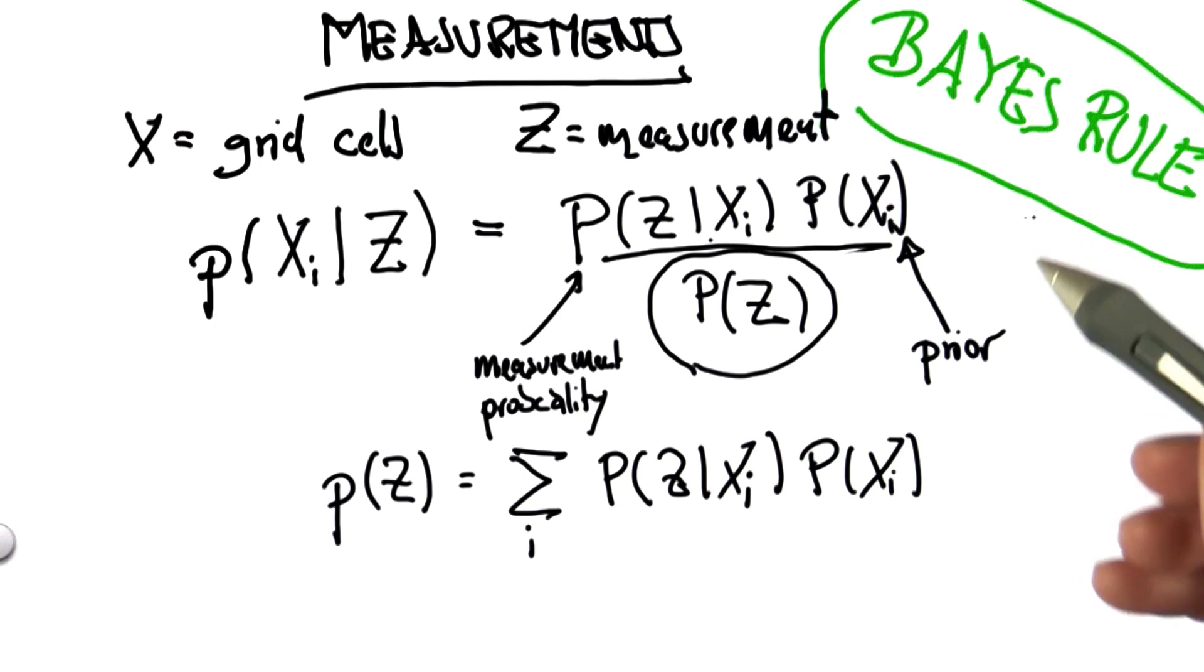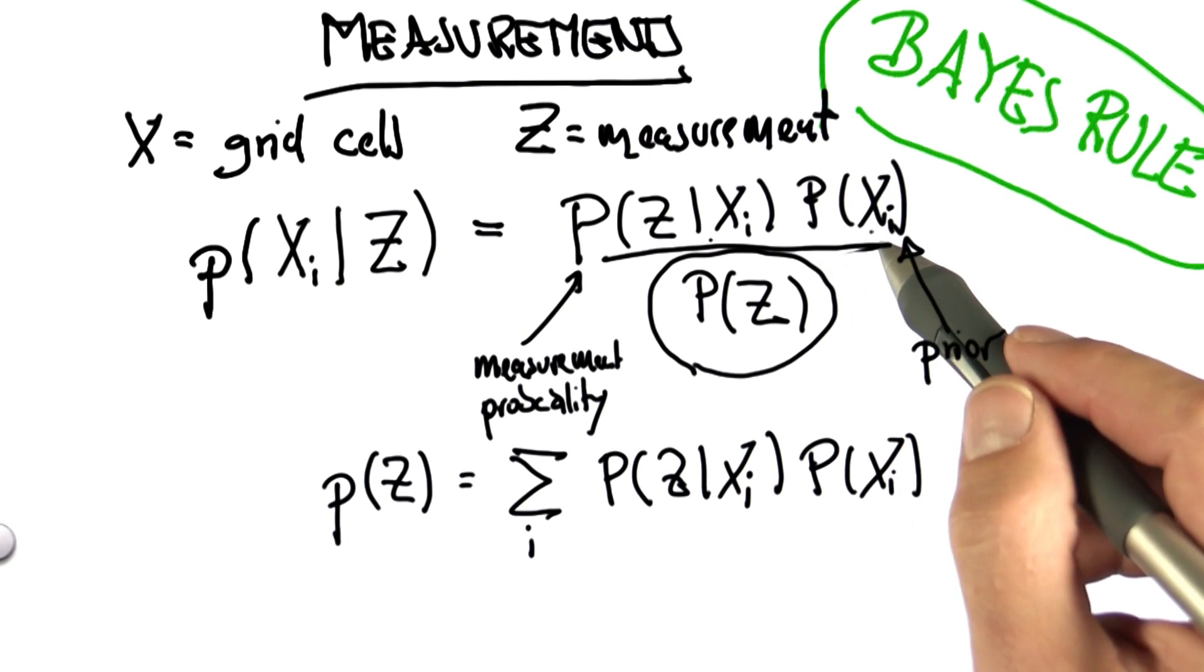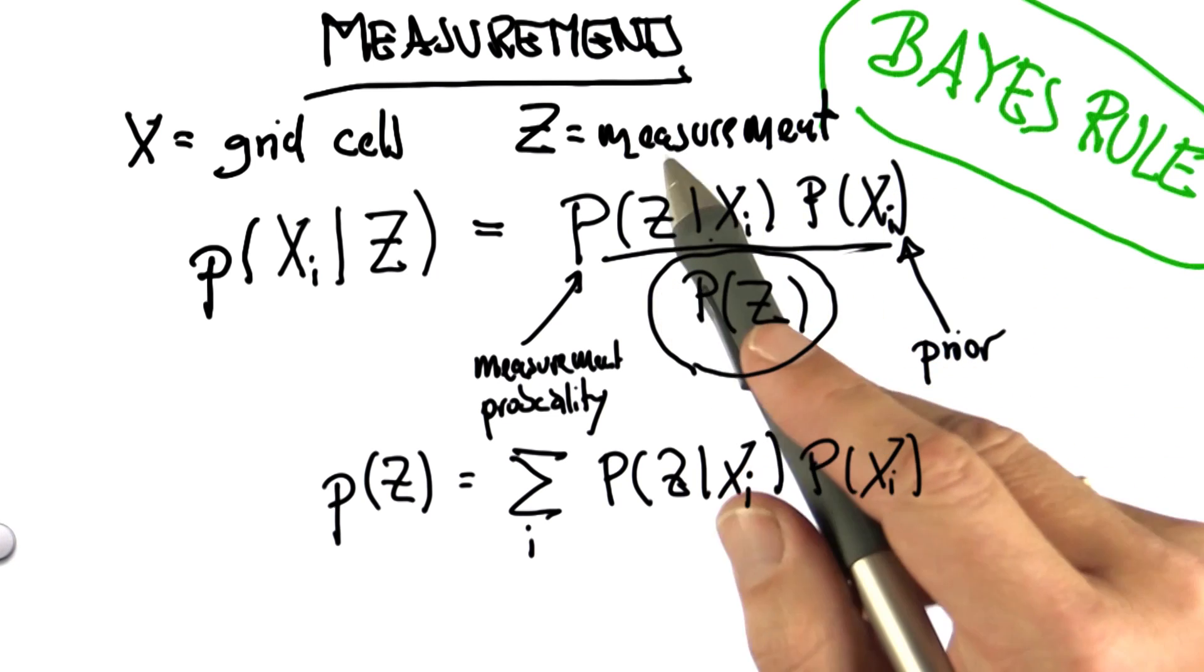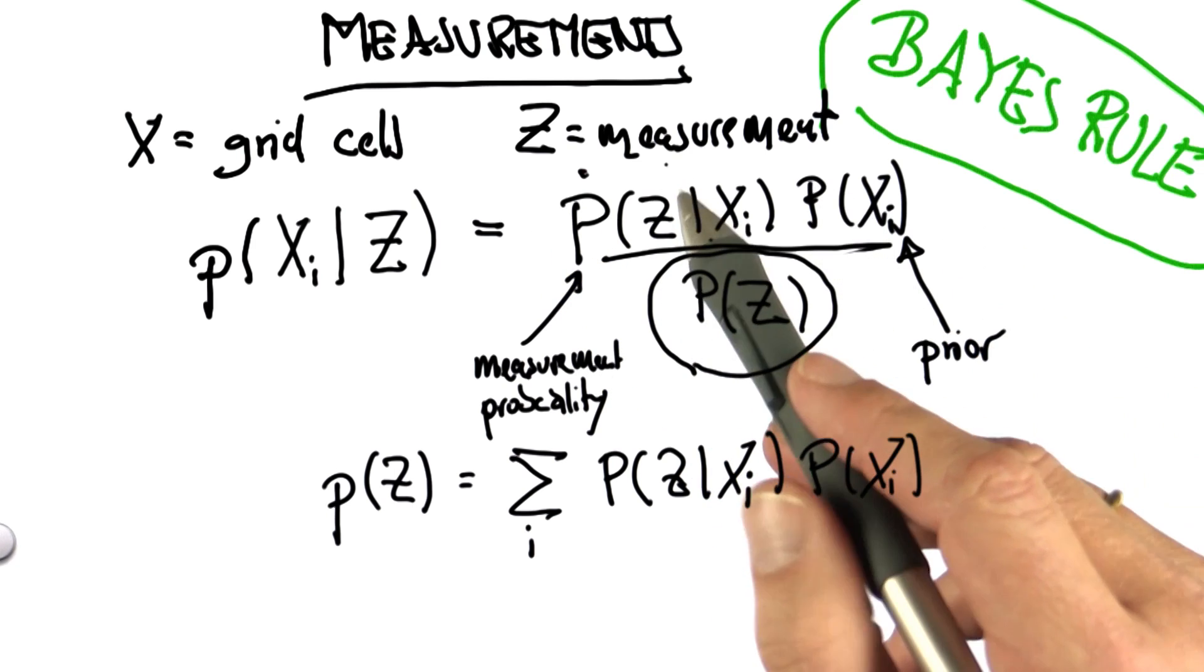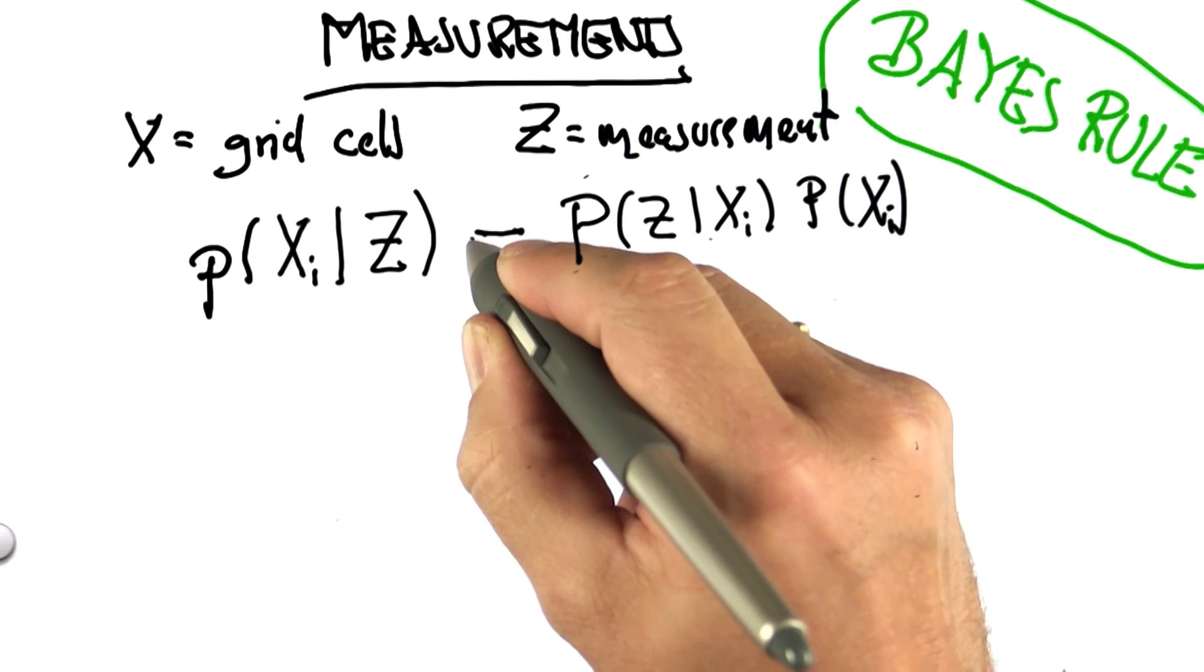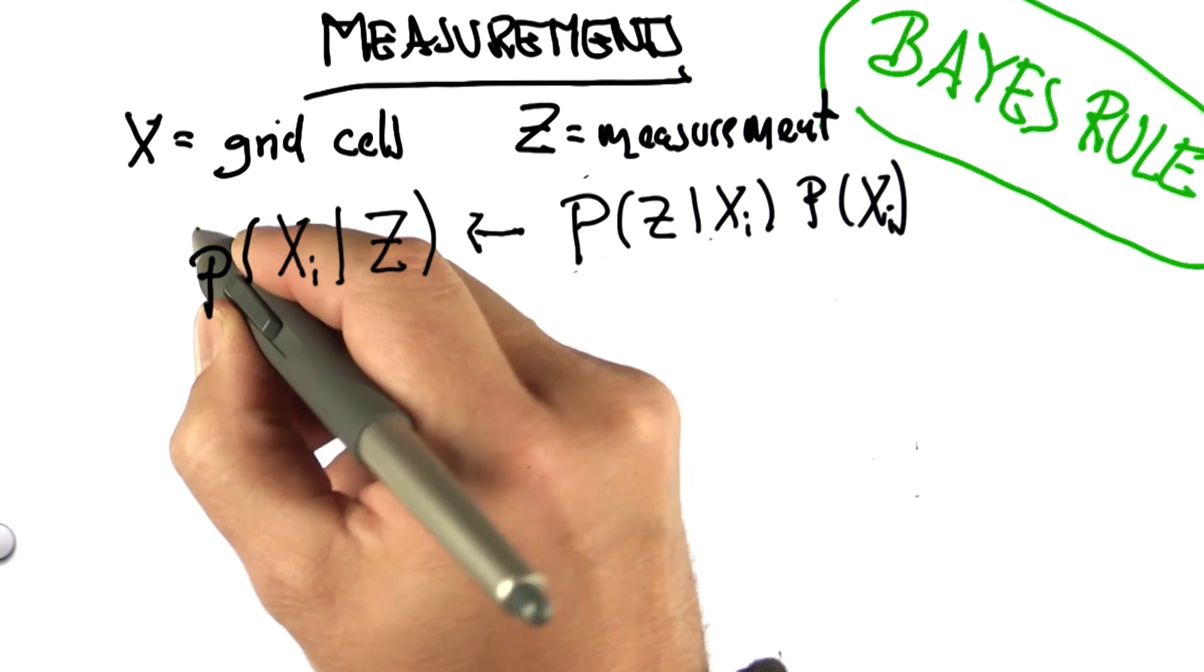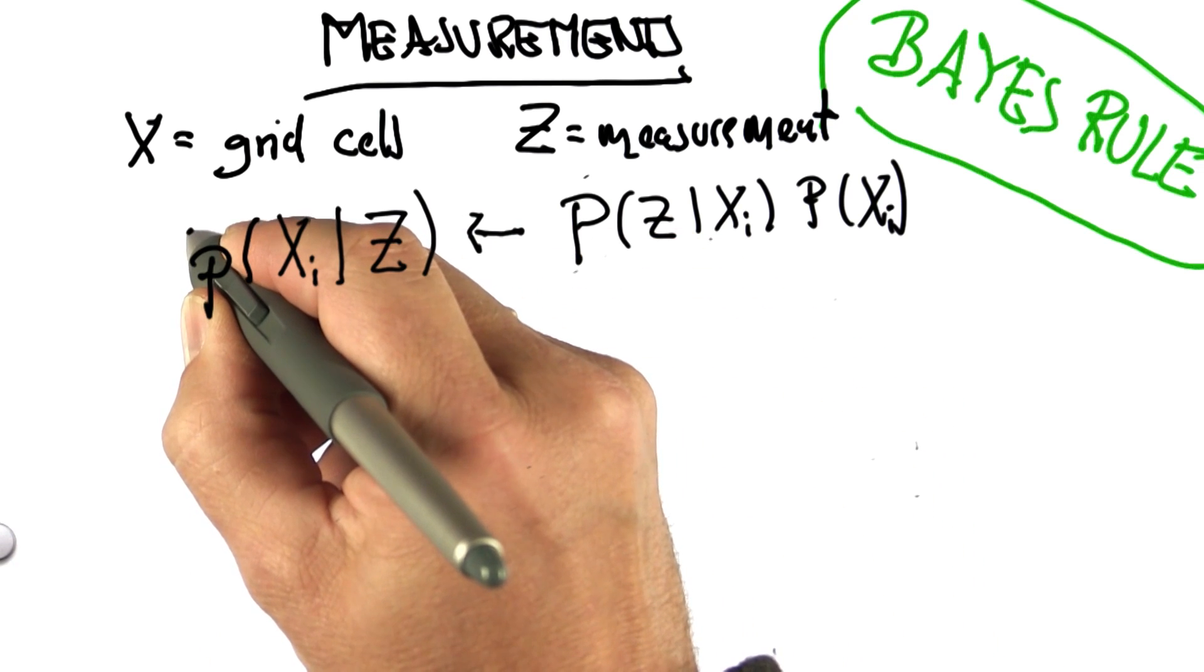So this makes Bayes' rule really simple. It's a product of our prior distribution with a measurement probability, which we know to be large if the color is correct and small otherwise. We do this and assign it to a so-called non-normalized probability, which I'll denote with a bar over the p.